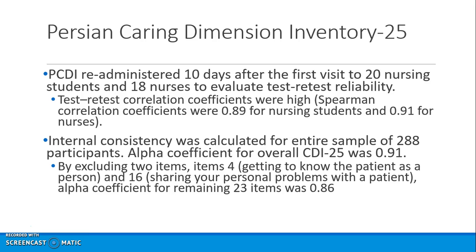A PCDI was administered 10 days after the first visit to 20 nursing students and 18 nurses to assess test-retest reliability. The Spearman, a non-parametric correlation coefficient, was used, and very high test-retest correlation coefficients were found. Looking at the CDI-25, an alpha coefficient was calculated as well — it's a large sample size, which is terrific, though you'd need to read the methods to understand exactly what was done.